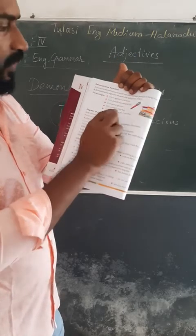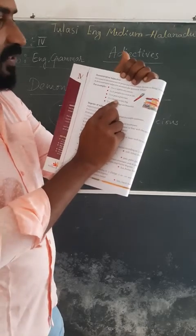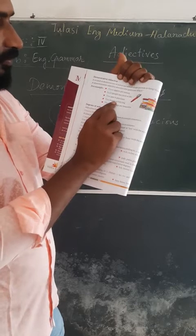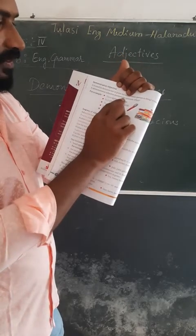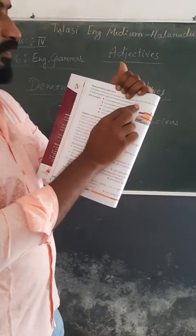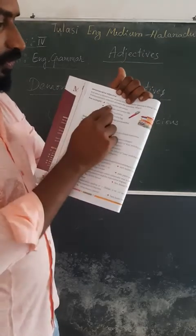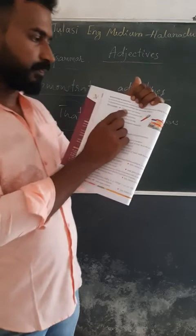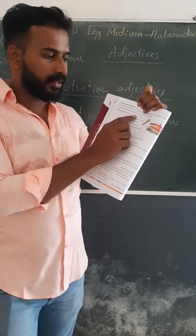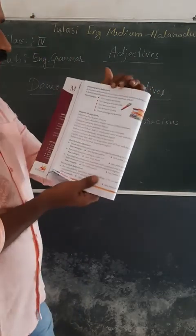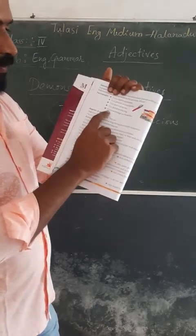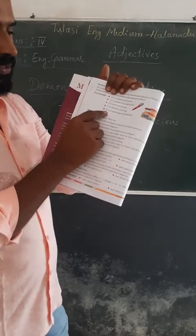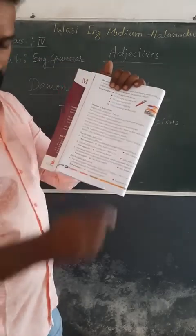A demonstrative adjective answers the question 'which' — it may point to a person or thing. Words like 'this,' 'that,' 'these,' 'those,' and 'such' are demonstrative adjectives. For example: 'Those paintings are beautiful' — the word 'those' points to the paintings. These words demonstrate the nouns in the sentences.